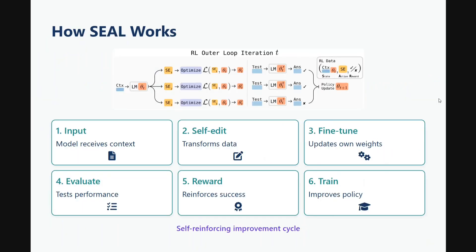So how does it work? The first step is the input — you provide new context, for example some new news that you want the LLM to learn. After that, the next important step is self-edit. Self-edit is a segment that the model generates itself. It consists of question-answer pairs generated from the input, rephrased versions of the content, and also the parameters to tune. Self-edit comprises the dataset to be trained on and the hyperparameters — all generated by the LLM.